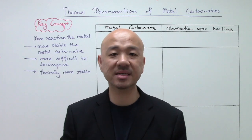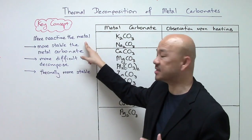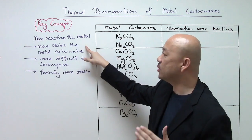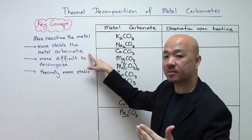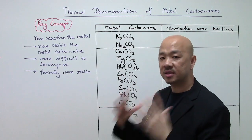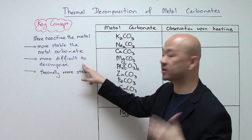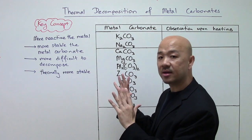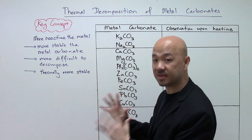Let's take a look at the key concepts on the board. The key concept here is that the more reactive the metal is in the reactivity series, the more stable the metal carbonate will be — just like the metal oxides we discussed previously. It is therefore more difficult to decompose the metal carbonate, and we say this carbonate is thermally more stable.